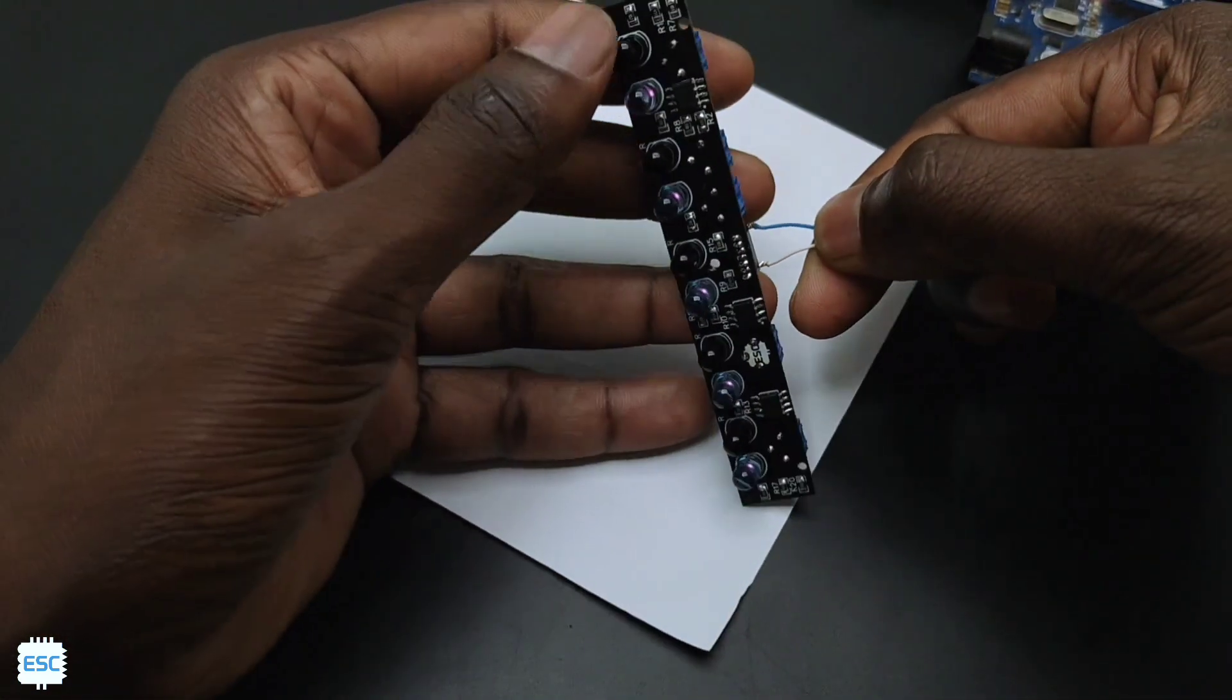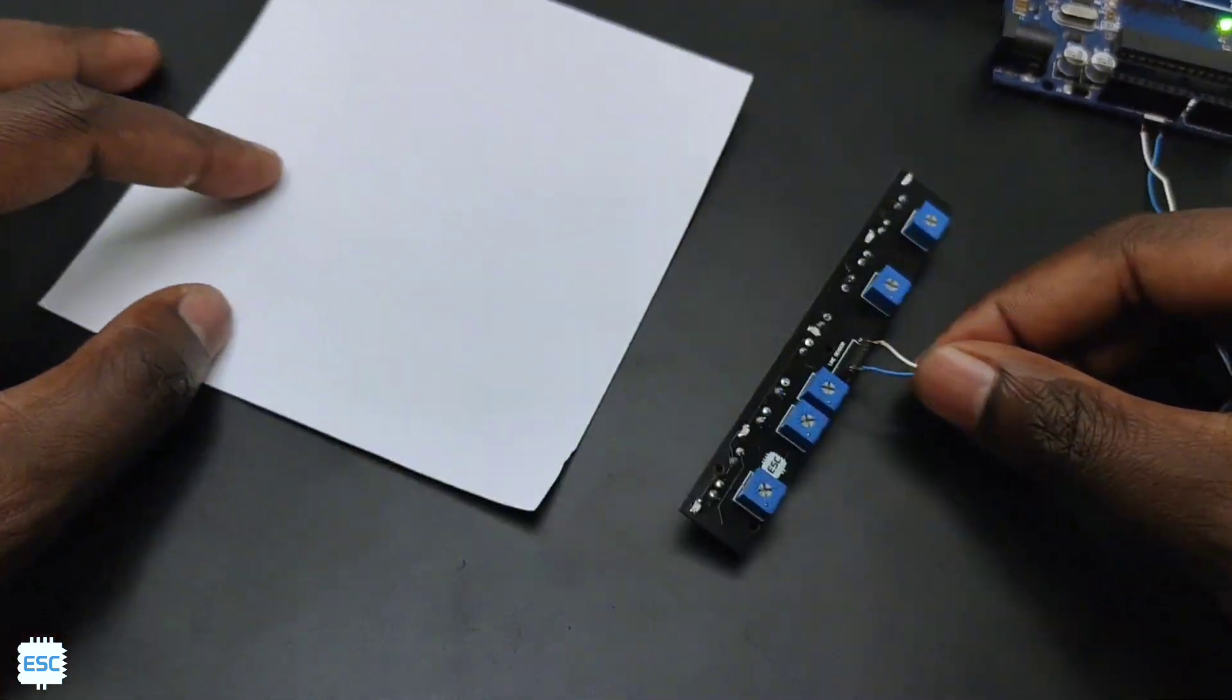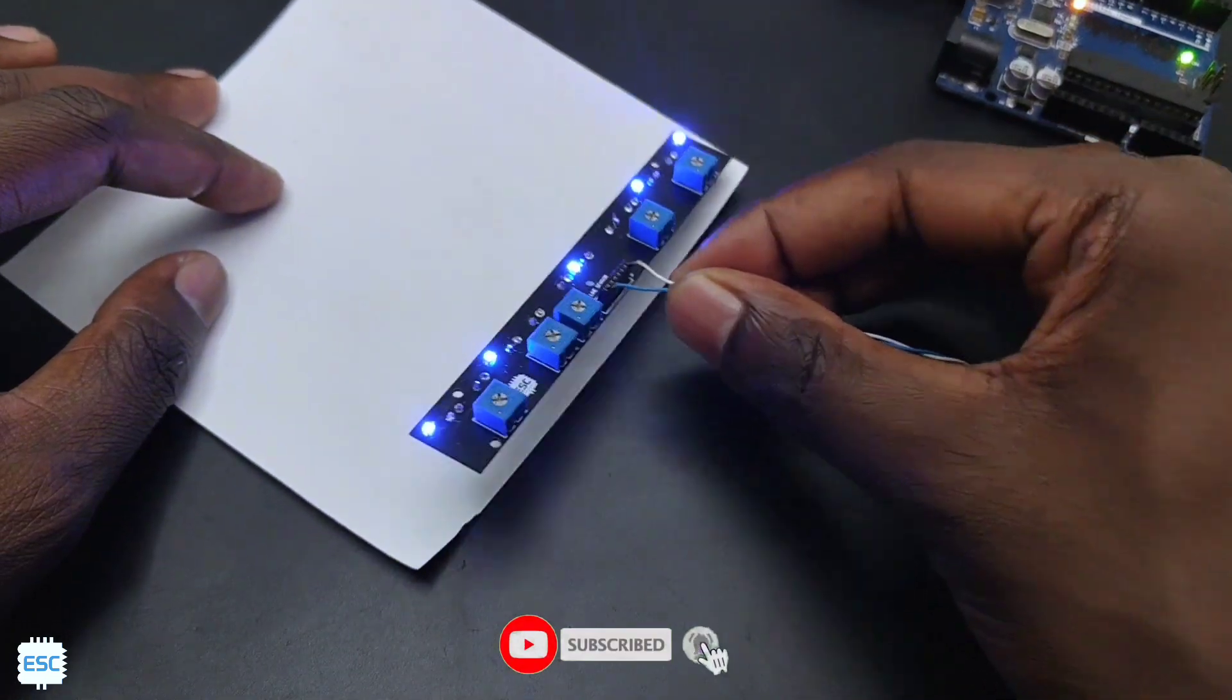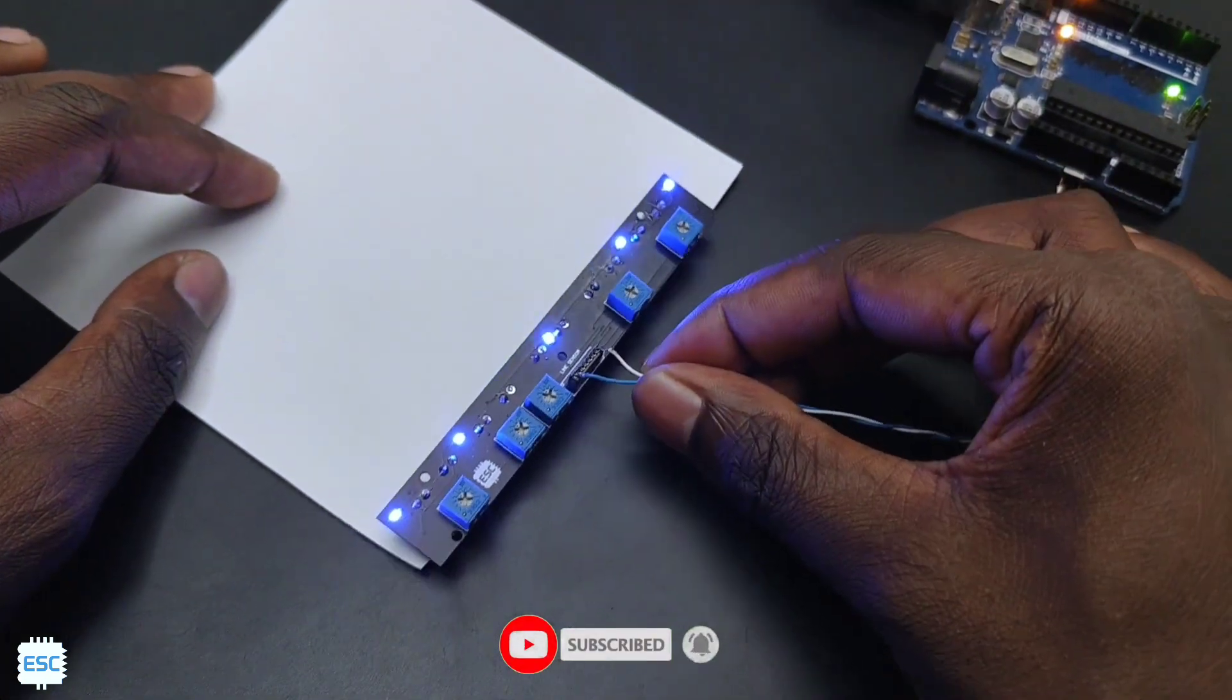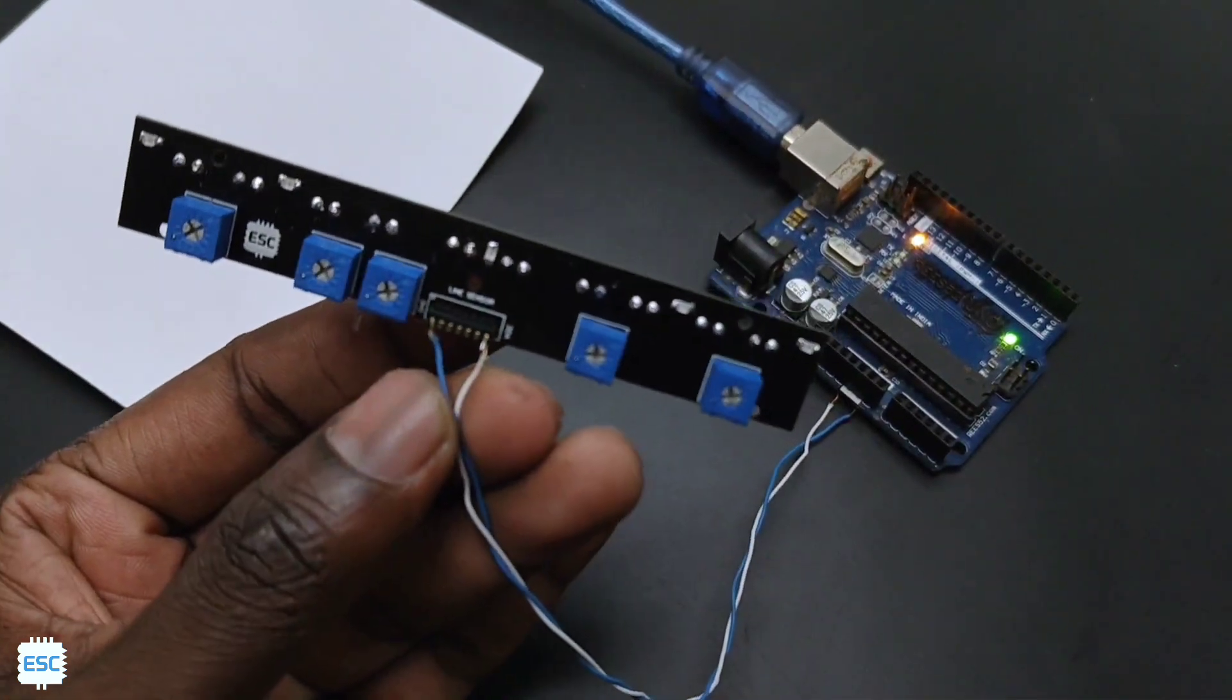You can download the circuit diagram from my website. Link is given in the video description. So that's it. This is how I made my own line array for line follower robots. Hope you enjoyed and learned something new from my video. If so, please consider supporting me by liking, sharing, and subscribing. That's all. Thank you.